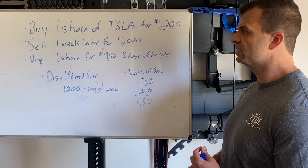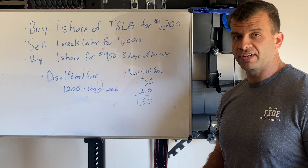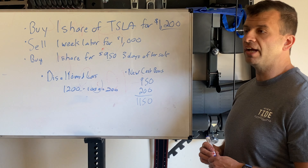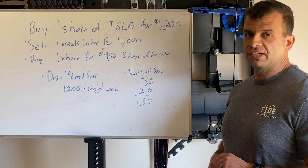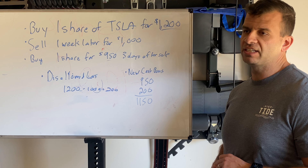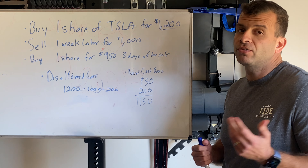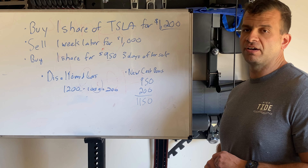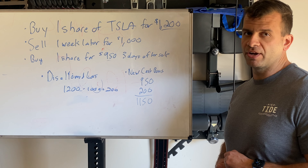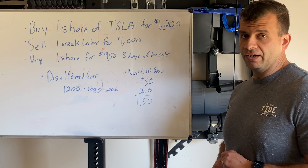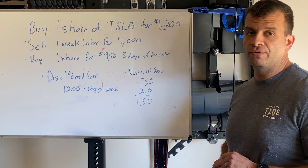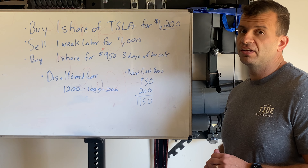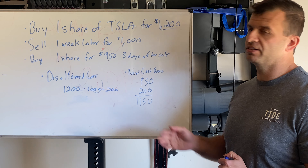The only time you lose that disallowed loss is if you bought the share in a retirement account — then you lose it permanently. Also, be aware that wash sales can go across brokers. Don't think you can sell on Schwab and buy on TD Ameritrade to get around it. I'm not certain whether brokers communicate with each other on statements, but I do know that if you were audited on your taxes, that would definitely be disallowed.